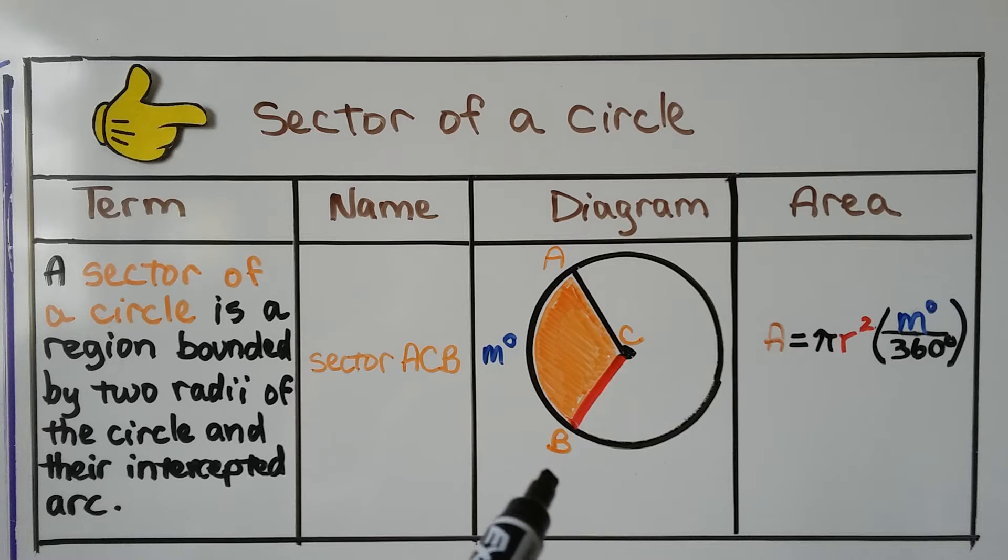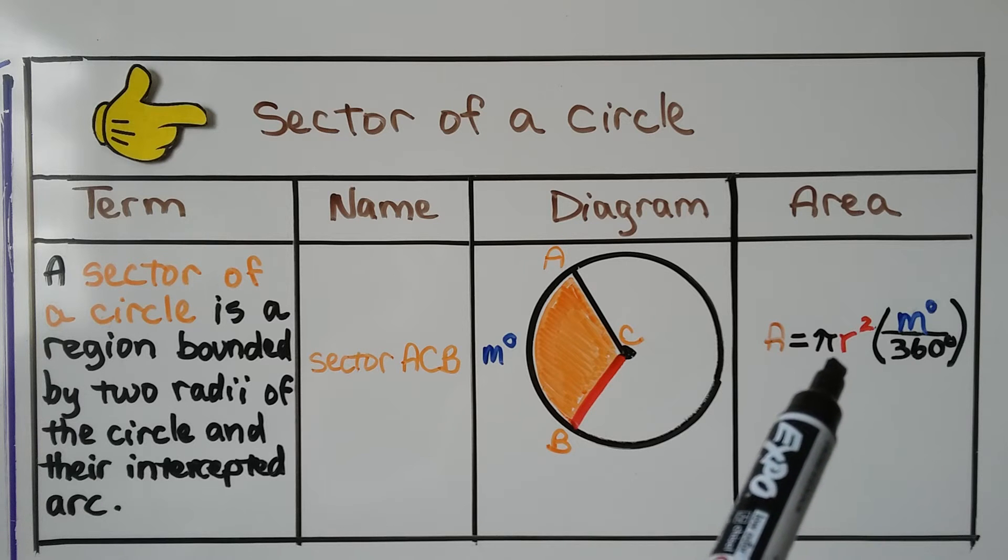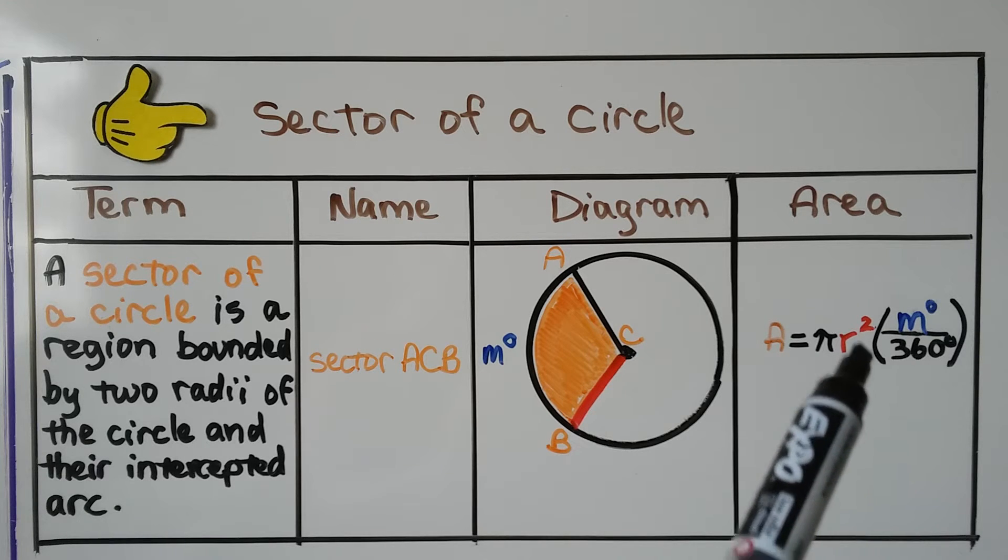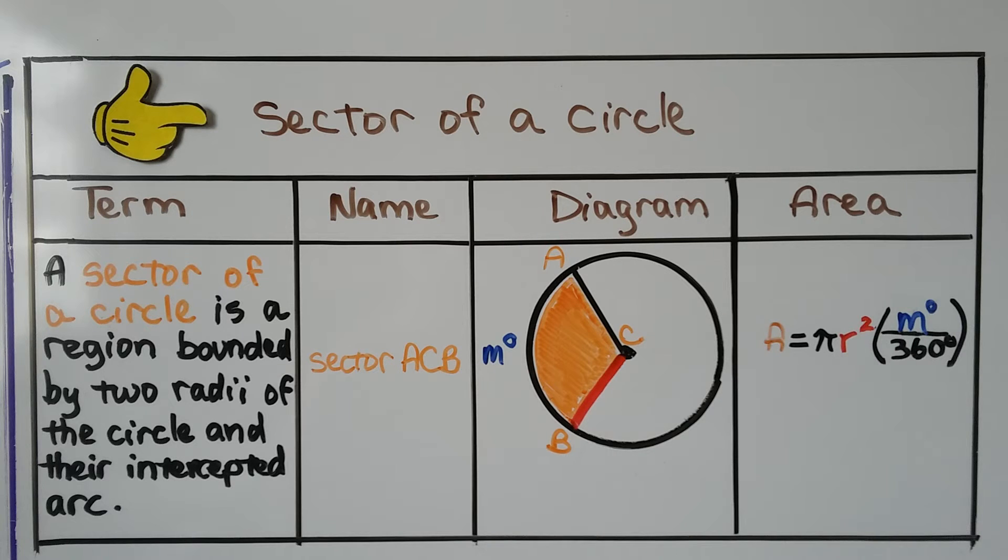So this is what it would look like, and if this arc was m degrees, we could find its area using the formula pi r squared times the quotient of that central angle degree and 360 degrees.